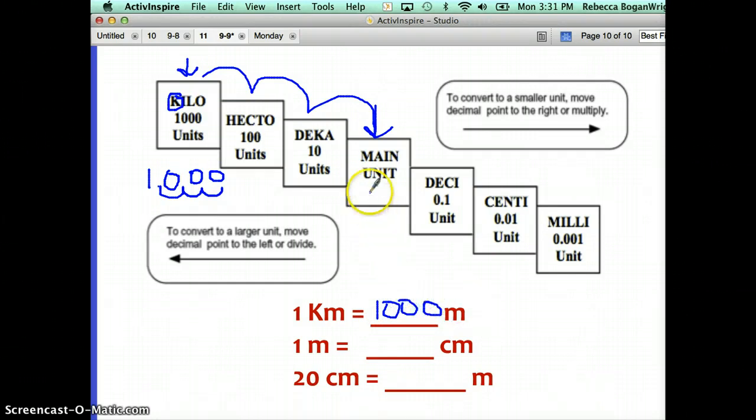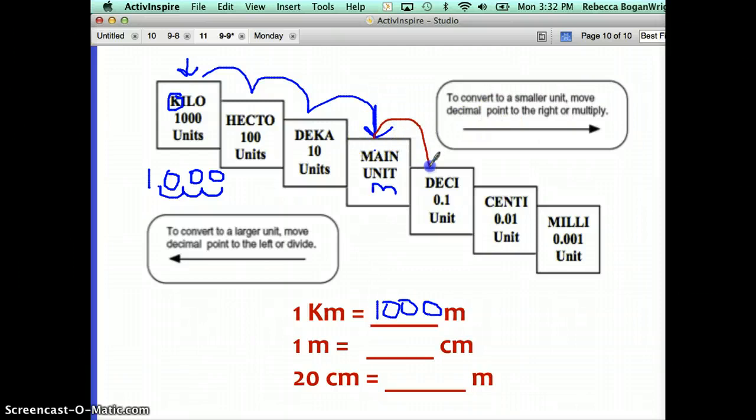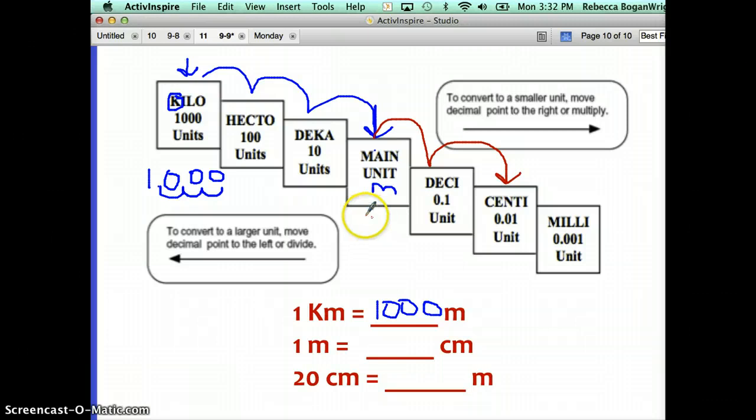What if we were going from one meter to one centimeter? Going from one meter to one centimeter, we start at the main unit, which is meter, and count how many steps to the right it takes to get to centimeter. In this case, that's two steps to the right or two places to the right. That means that we move the decimal point two places to the right, or in other words, multiply by one hundred. Moving the decimal point is the same as multiplying by ten every time you move the decimal point one place to the right.